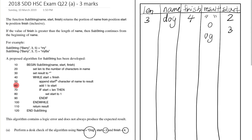We add one to start, making start 4. We check if start is greater than len — 4 is greater than 3, so this is true — and we set start back to 1. Back at the top of the while loop, start is 1 and finish is 4, so the condition is still true. We append the first character of name — 'D' — to result, giving 'ogD'.